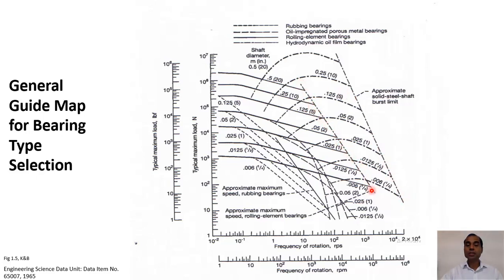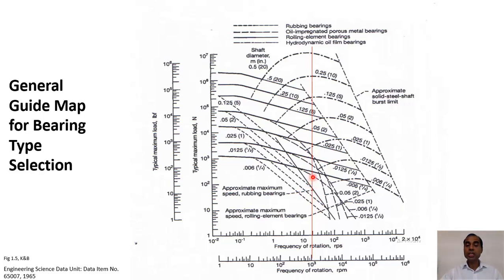These limits indicate that we cannot use a bearing beyond those boundaries. The numbers represent shaft diameter in meters or inches. For example, at a rotational speed of 1000 rpm, if we draw a vertical line and increase the load, for lower loads we can use rubbing bearings with no lubrication. As we increase the load, we need partial lubrication, and further still, we need rolling element bearings, with shaft diameter increasing accordingly.